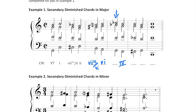The root of this chord is E. When we determine the stack of thirds from E, we find we have a seventh chord: E, G, B♭, and D♭. The quality of this chord is fully diminished seven. Thus the Roman numeral is going to be vii°65 of IV.